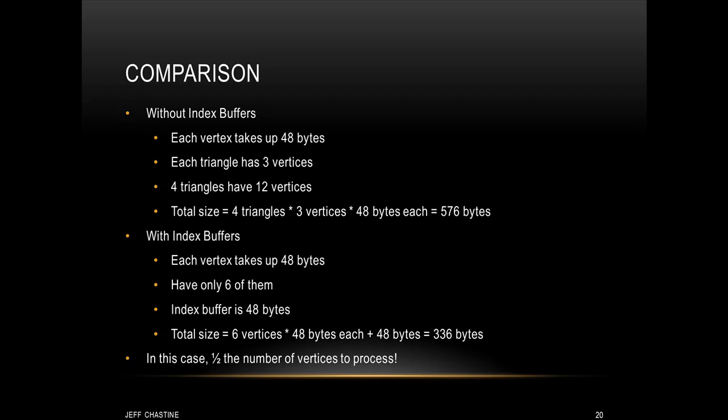Alright, let's do a comparison between the old way that we were doing it and using index buffers. Now, realize that in both of these cases, a vertex is going to take up 48 bytes. However, without index buffers, we have four triangles that have three vertices each for a total of 12 vertices. Therefore, our total size is going to be four triangles times three vertices times 48 bytes each gives us 576 bytes. Now, if we do use index buffers, we still have a vertex that takes up 48 bytes, but in this case, we only have six of them. We've also already established that the index buffer for this example is 48 bytes. So, therefore, the total size using index buffers is going to be six vertices times 48 bytes each plus 48 bytes for the index buffer gives us a total of 336 bytes. Now, when we start getting into larger and larger models, you can see that this is going to cut down significantly on the amount of data that we have to move over to the GPU. You might also notice that because we haven't specified any redundant vertices, we've actually cut the number of vertices to process in half.